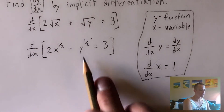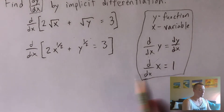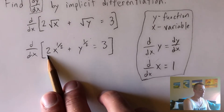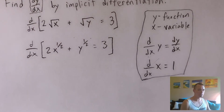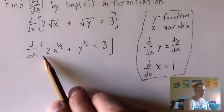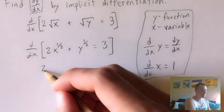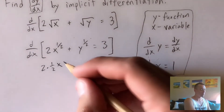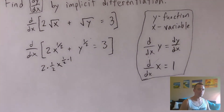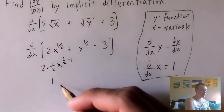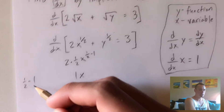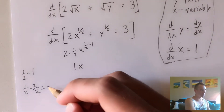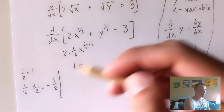Now we can use the power rule to differentiate each piece. For two times x to the one-half, this only has our variable x in it, so the derivative behaves as expected. The power rule says bring the power down in front: two times one-half equals one. Then keep x and lower the power by one: one-half minus one equals one-half minus two-halves, which is negative one-half. So the derivative of the x term is x to the negative one-half.